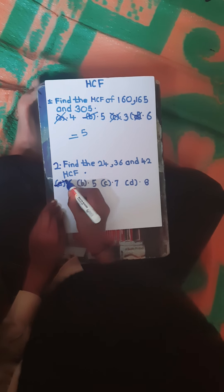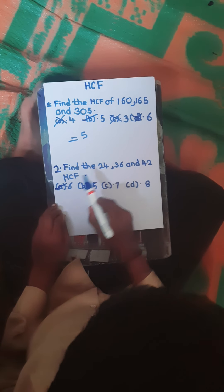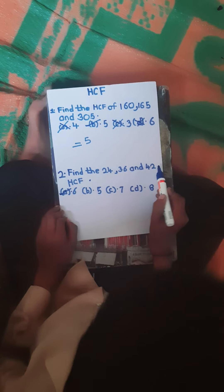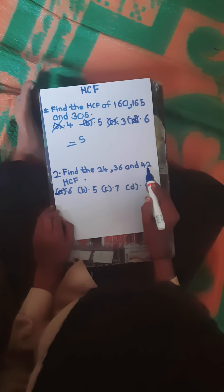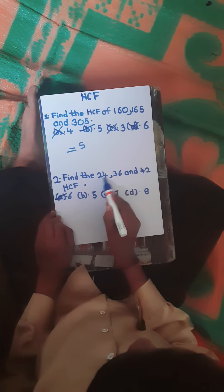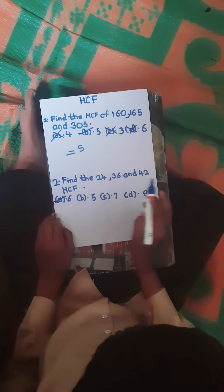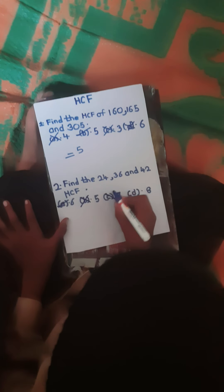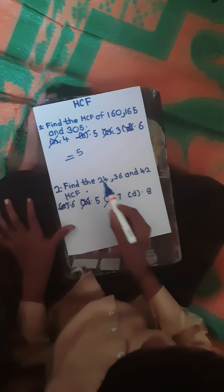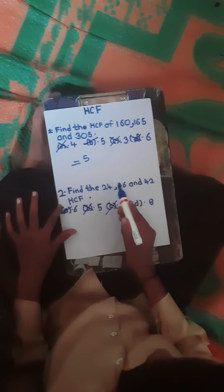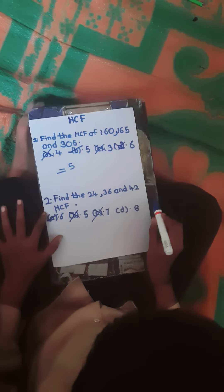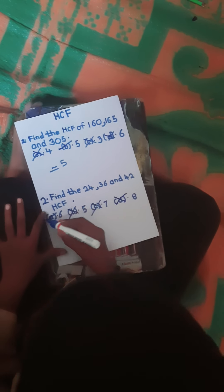Now checking 5: 5 is not divisible into 24, 36, or 42, so 5 is wrong. Checking 7: 7 does not divide 24, and does not divide 36 evenly, so 7 is wrong. Checking 8: 8 × 3 = 24 ✓, but 8 does not divide 36 or 42, so 8 is also wrong.